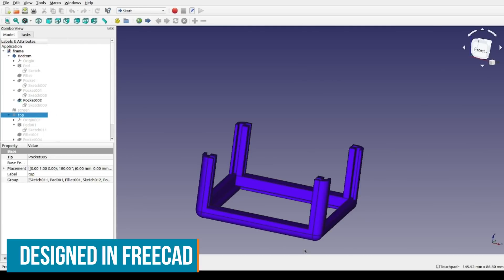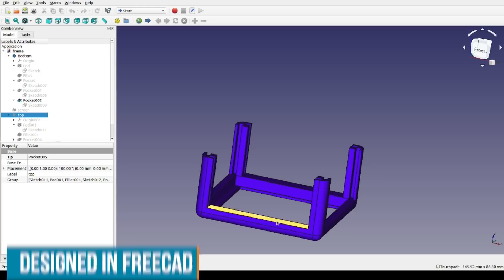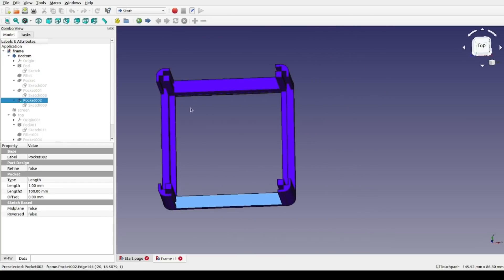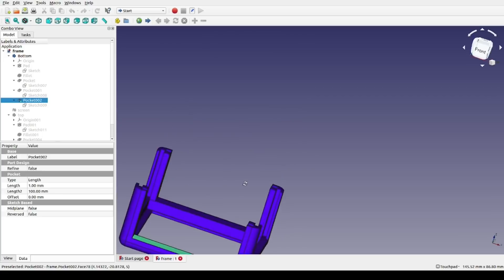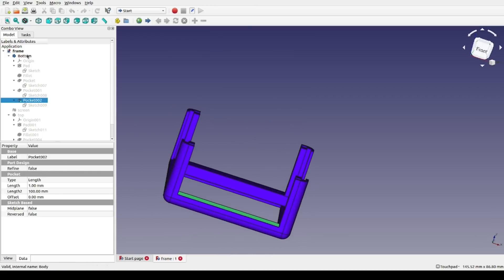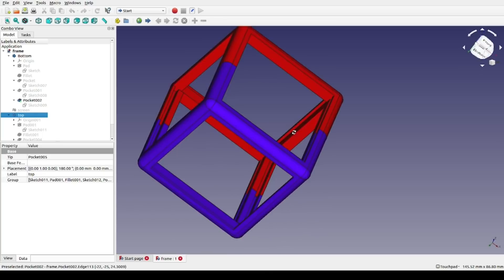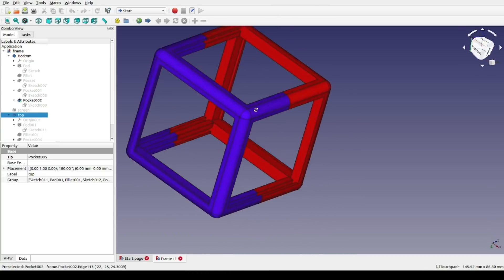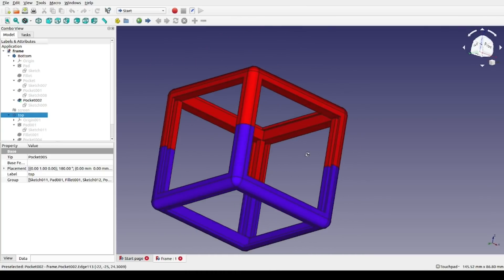My PCBs are going to need something to hold them together in a cube shape so I'm going to 3D print a frame. I've designed this in FreeCAD. I've got this bottom part here. There's a slot to put the PCB in at the bottom and four slots on the edges to slot the PCBs in down the side. I'll print two the same. It will all slot together and hold all six PCBs.